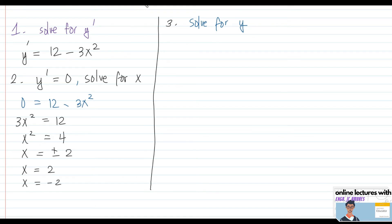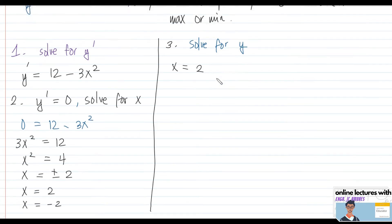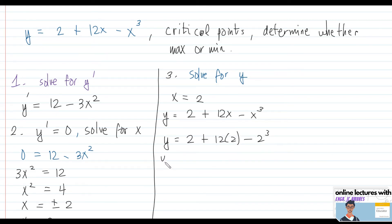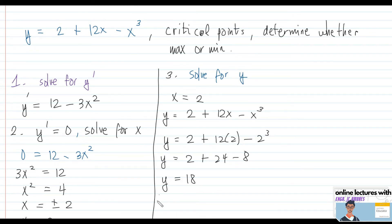At x = 2, substitute into the original function y = 2 + 12x - x³: y = 2 + 12(2) - 2³ = 2 + 24 - 8 = 18. So the first critical point is (2, 18).